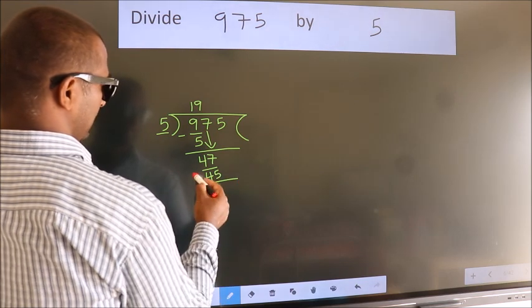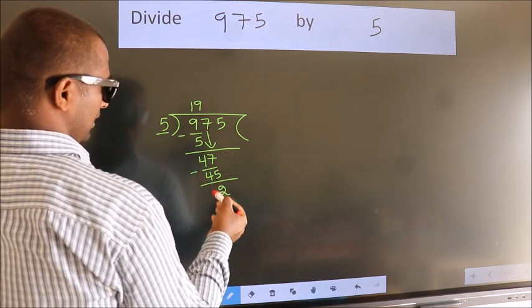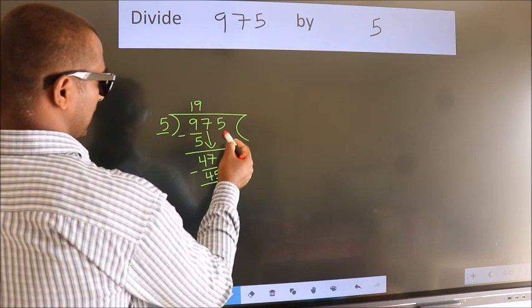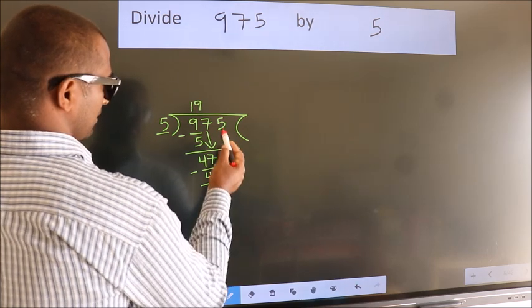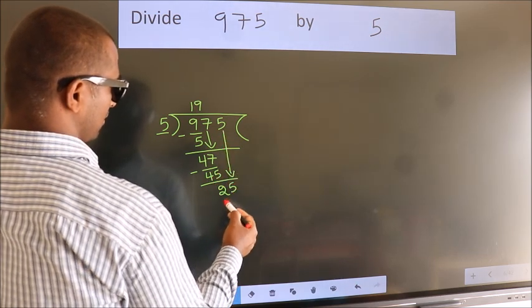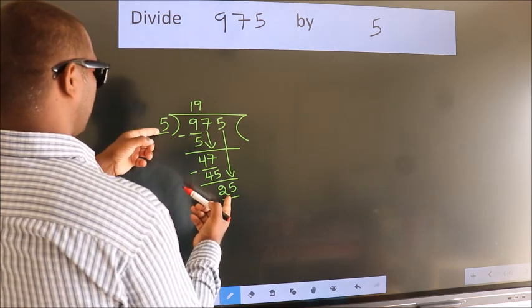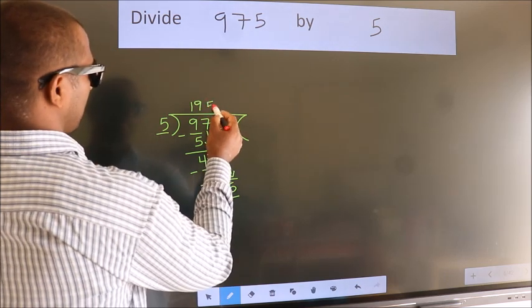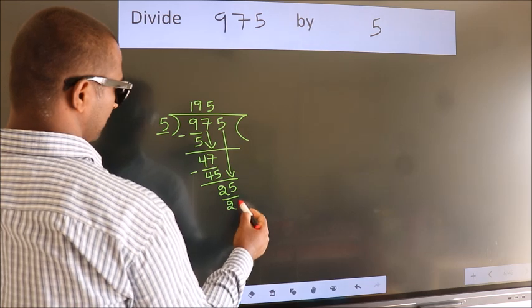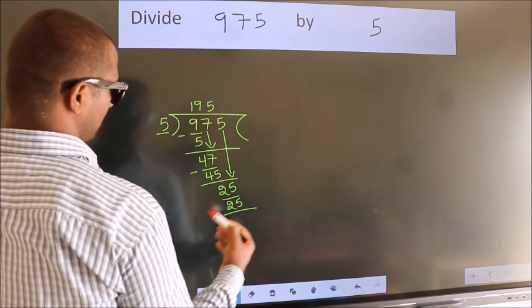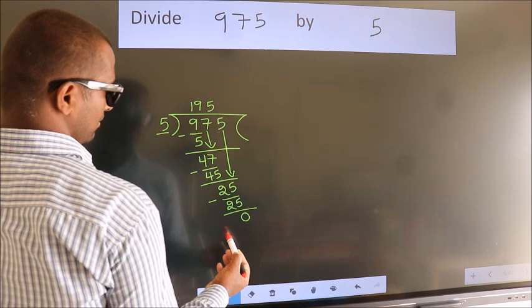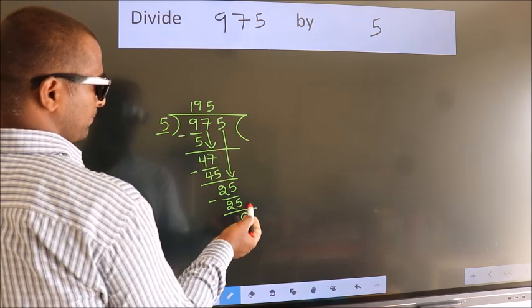Now we subtract and get 2. After this, bring down the beside number, so 5 comes down, making 25. When do we get 25 in the five table? Five fives equal 25. Now we subtract and get zero.